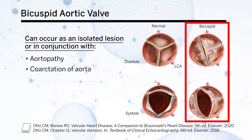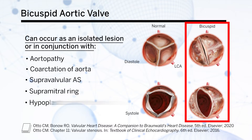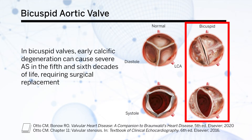Coarctation of the aorta, supravalvular aortic stenosis, supramitral ring, or hypoplastic arch or left ventricle can also be seen. As I mentioned earlier, early calcific degeneration can cause severe aortic stenosis in the fifth or sixth decades of life requiring surgical replacement.